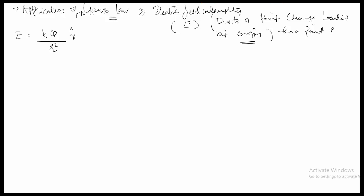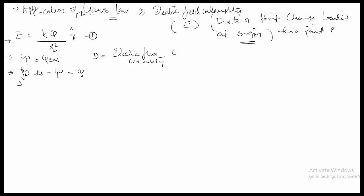What we found from Gauss's Law is that the total flux is equal to Q enclosed. The equation of the electric flux density D is obtained from the surface integration of D dot dS, which gives the total charge enclosed equal to Q. D is the electric flux density given in Coulombs per meter squared, and the electric field intensity is given in Newtons per Coulomb.